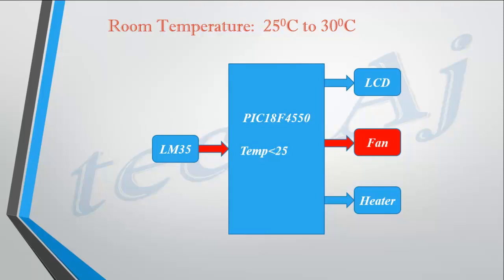If the temperature of the room goes below 25 degrees Celsius, our system will start the heater so that the temperature rises above 25 degrees Celsius. And if the temperature is in the range of 25 to 30 degrees Celsius, our system will keep both the fan and heater off. All this information will be displayed on the LCD.